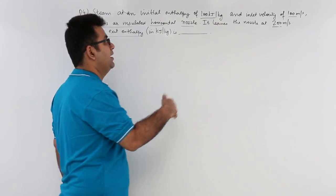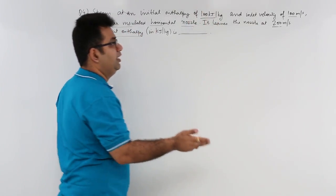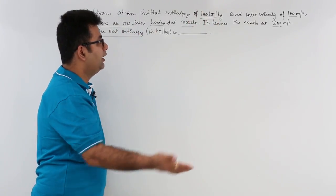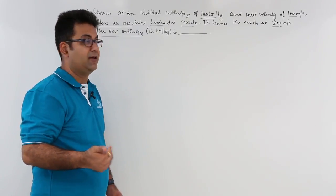Now this velocity increases at the expense of what? It increases at the expense of this enthalpy. So the enthalpy H2, that is the outlet one, would be less than compared to this one.